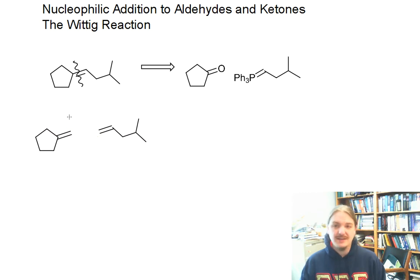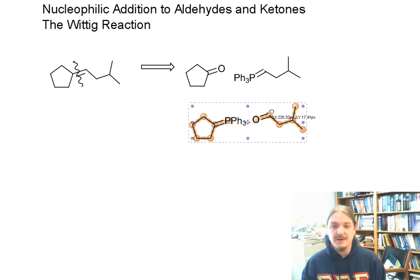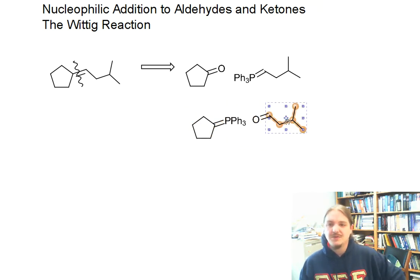One of these double bonds ends in the oxygen for the carbonyl group and the other one ends in the phosphorus, the triphenyl phosphorus group. So I've got my aldehyde in this case and a different phosphorus ylide.